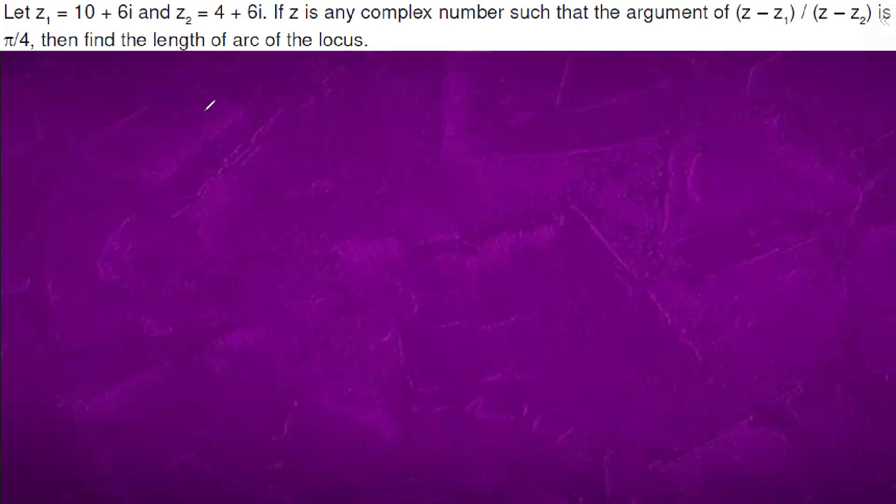We are told that the argument of (Z - Z1) divided by (Z - Z2) equals π by 4.